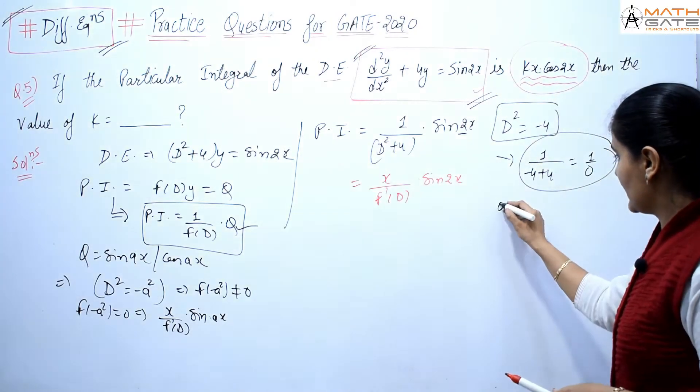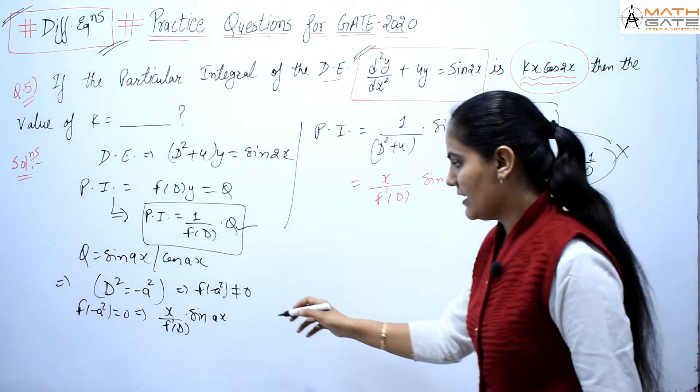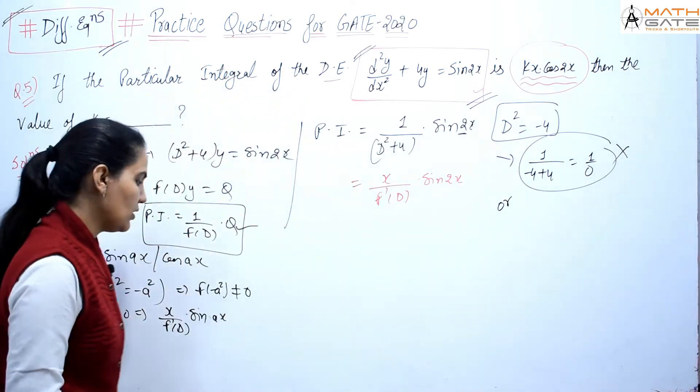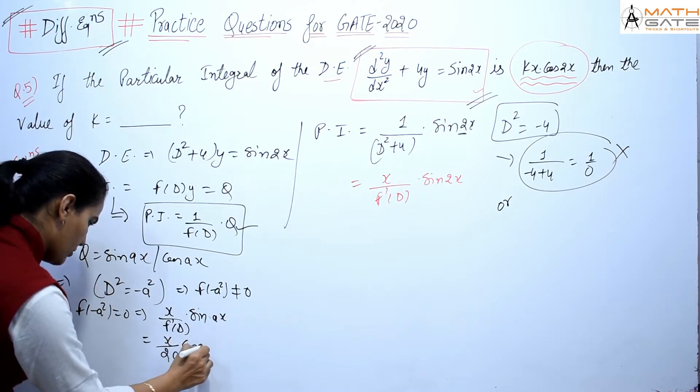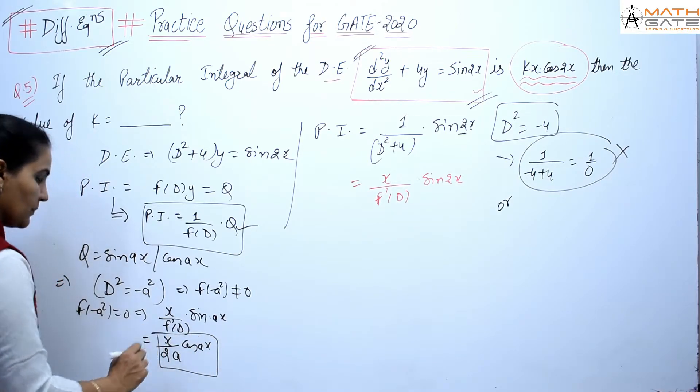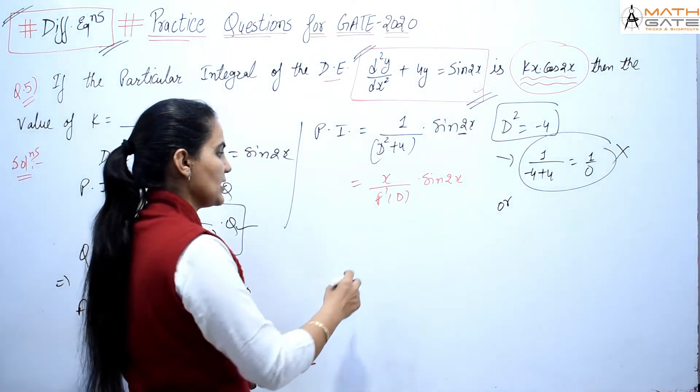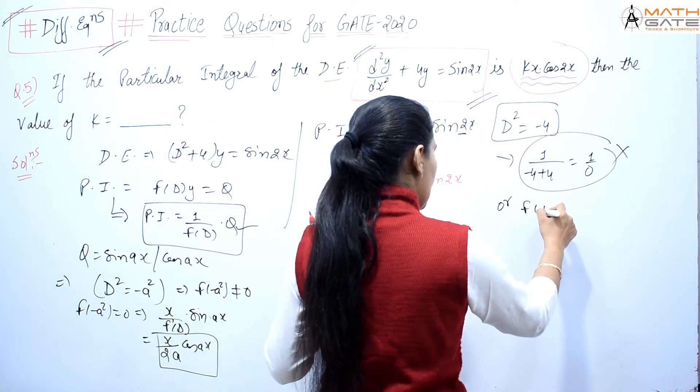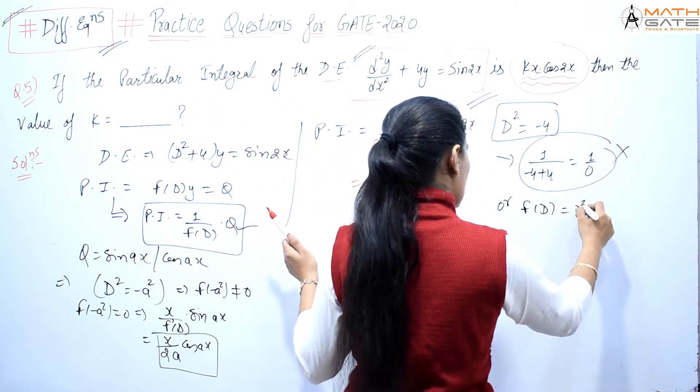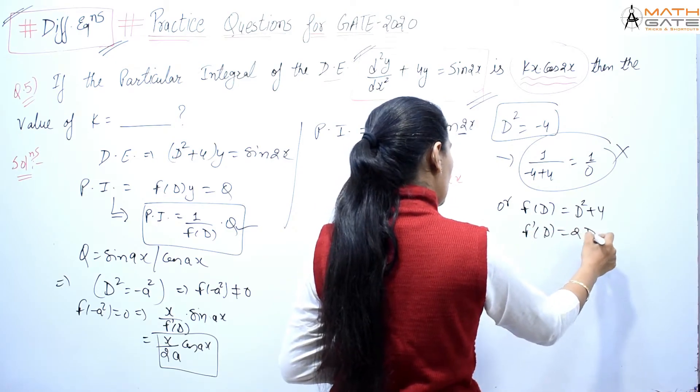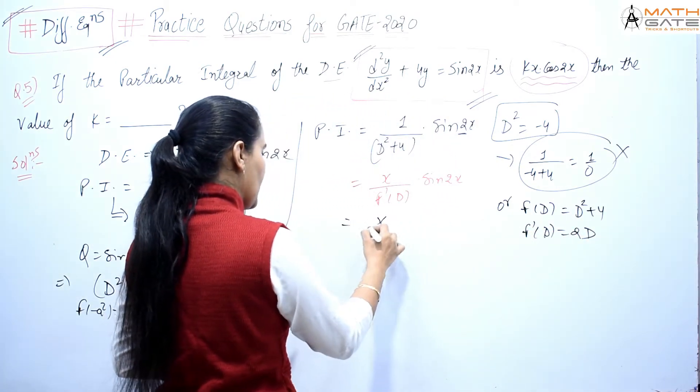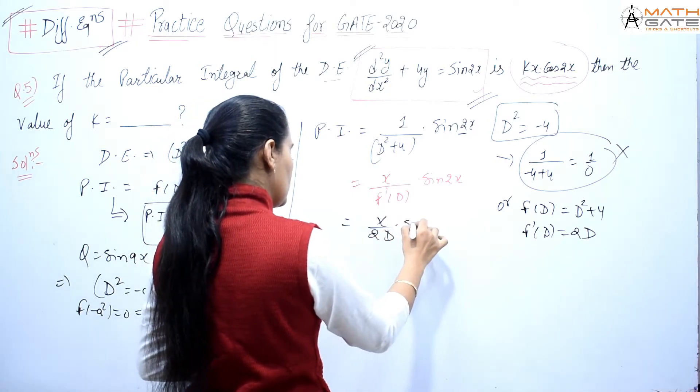Or you can write it like this: x/(2a) times cos(ax). So I can write it here: x/(f(D)). What is f(D)? f(D) equals D² + 4. Take this derivative: f'(D) times sin(2x).